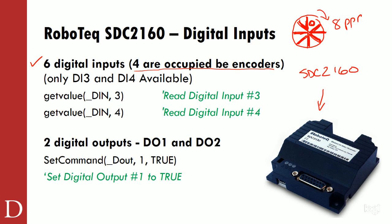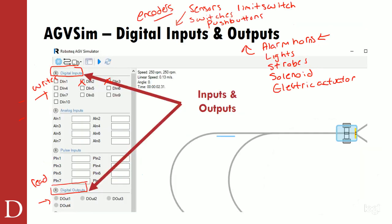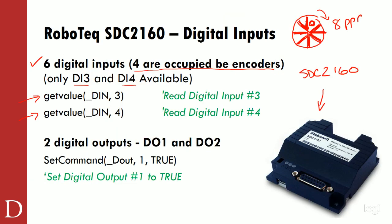Although four of the digital inputs are occupied, we do have access to DI3 and DI4. If I wanted to measure up a proximity sensor, radar sensor, ultrasonic sensor, or limit switch for safety, I could get those values using the command 'get value_dn3' or 'get value_dn4'. We won't get access to one, two, five, or six — we will get access to three and four. These are Boolean: on or off, true or false.